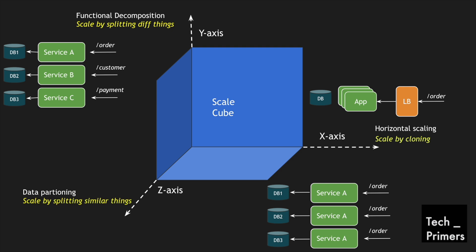So data partitioning can also be called 'scale by splitting similar things.' The order data set is split — for example, specific orders from a specific city go into a separate data set — and you can individually scale these services based on their data sets. This is another way in which you can scale your application.